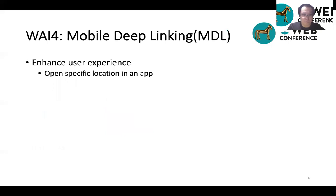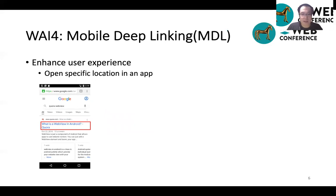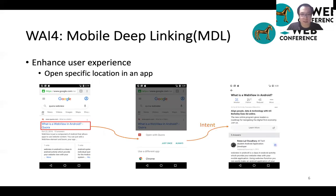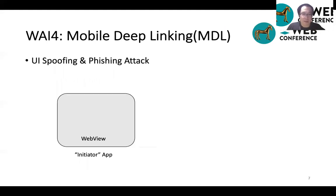The fourth mechanism is called mobile deep linking. MDL can enhance mobile app user experience by allowing users to open specific locations within a mobile app. We use the Quora app again to show how it works. First, we did some search in the web browser and get a link related to Quora. After we click the link, it shows a dialog to let us open the link within the Quora app. If we accept it, the browser sends an intent to the Quora app, and Quora will handle it and jump to that link directly. The vulnerability of MDL is that it can be exploited to launch UI spoofing and phishing attacks.